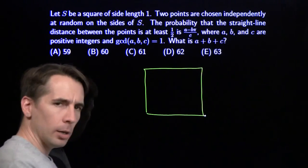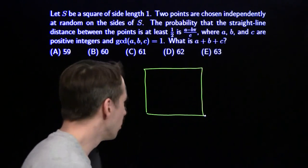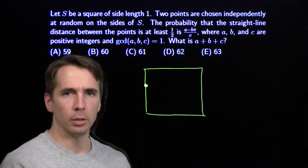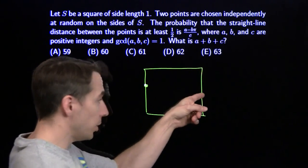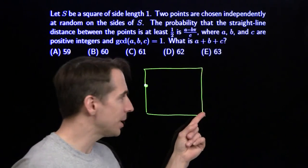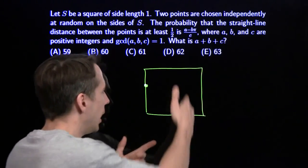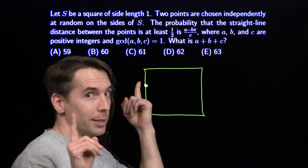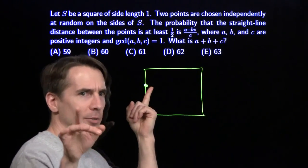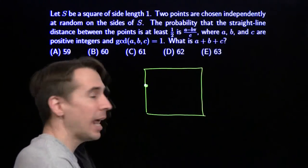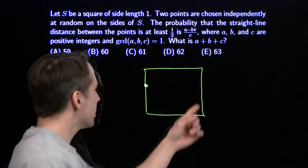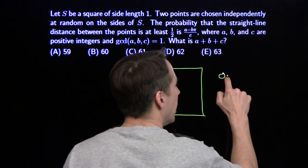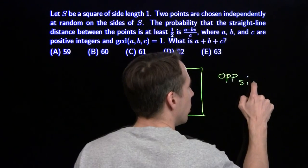I don't have anything right away, so I'm going to play with the problem. I'm just going to imagine I pick the first point here. What can happen to the second point? Well, one thing that can happen is it can end up on the opposite side. I like thinking about that because it's easy. Any point on the opposite side is at least one away from our first point, and one is greater than a half. So any point that ends up on this side is going to be at least a half away and we're going to win.